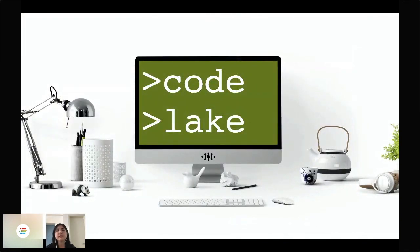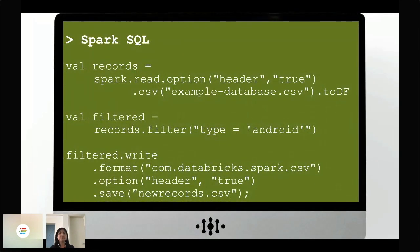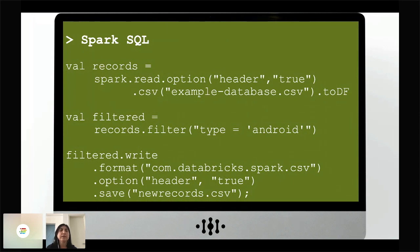We talked a lot about data lakes, but there's something we also need: a code lake — having your code available to be used in distributed processing so you can create data science pipelines in a more scalable and fast way. With Spark SQL, Java developers have a great opportunity here. This is an example of Spark SQL code — written in Scala but you can write the same thing in Java. In one line you read a file, get a DataFrame, filter it by some condition, and write back to a new file.